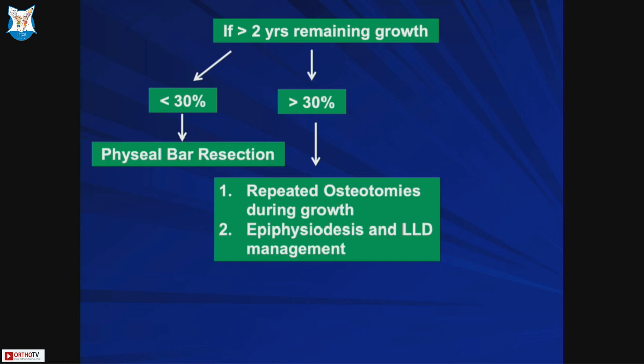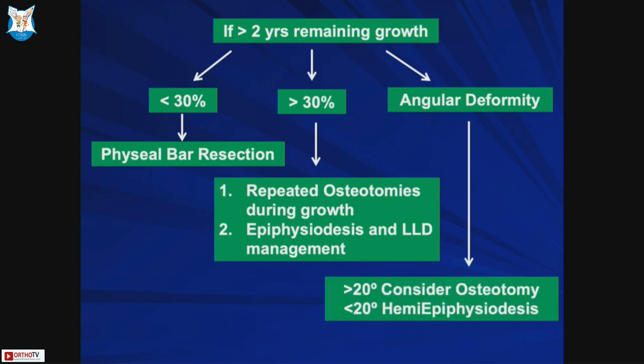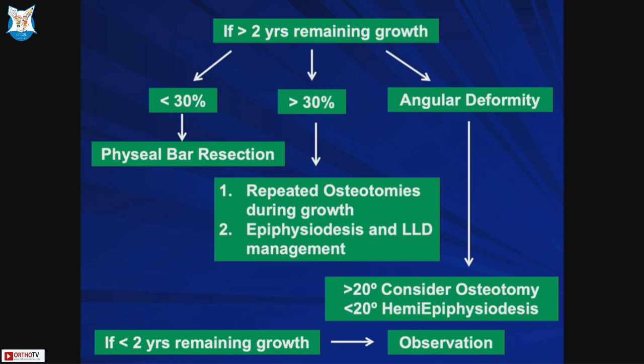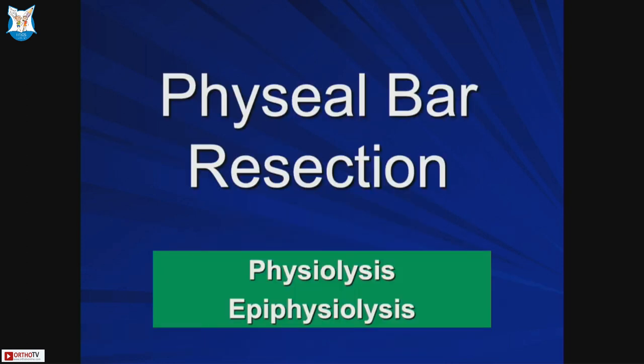If timed well, osteotomies are usually needed two times during growth, especially if the patient is younger than 8 to 10 years. Alternatively, you can do an epiphysiodesis and manage limb length discrepancy and deformity later. For angular deformity, if it is less than 20 degrees, a hemi-epiphysiodesis can be done. If less than two years of growth remain, observation is usually appropriate.